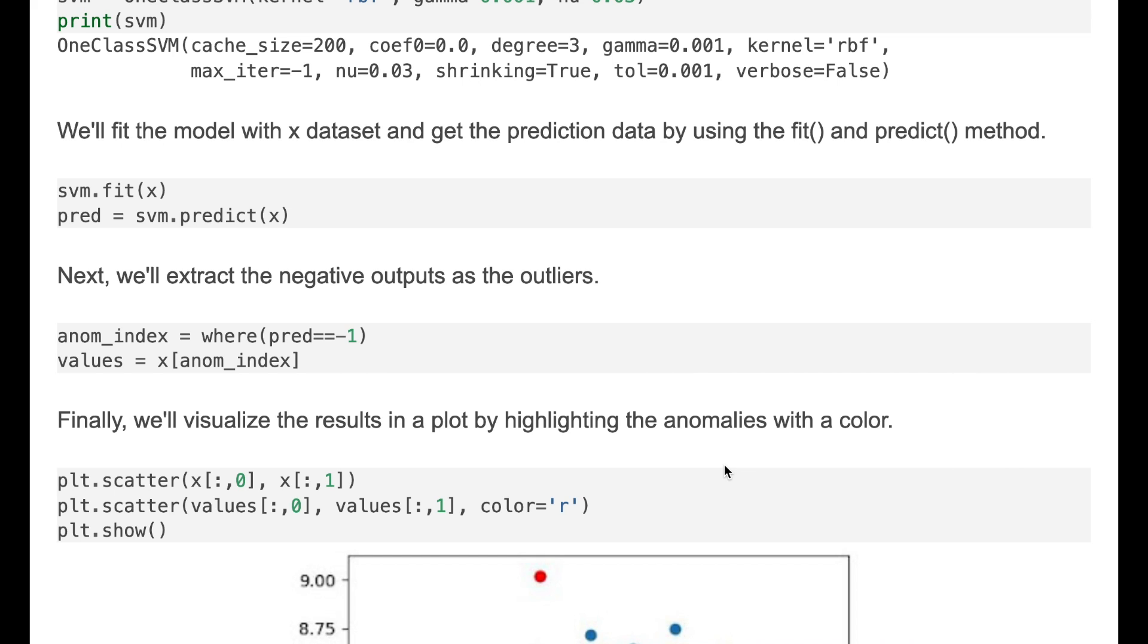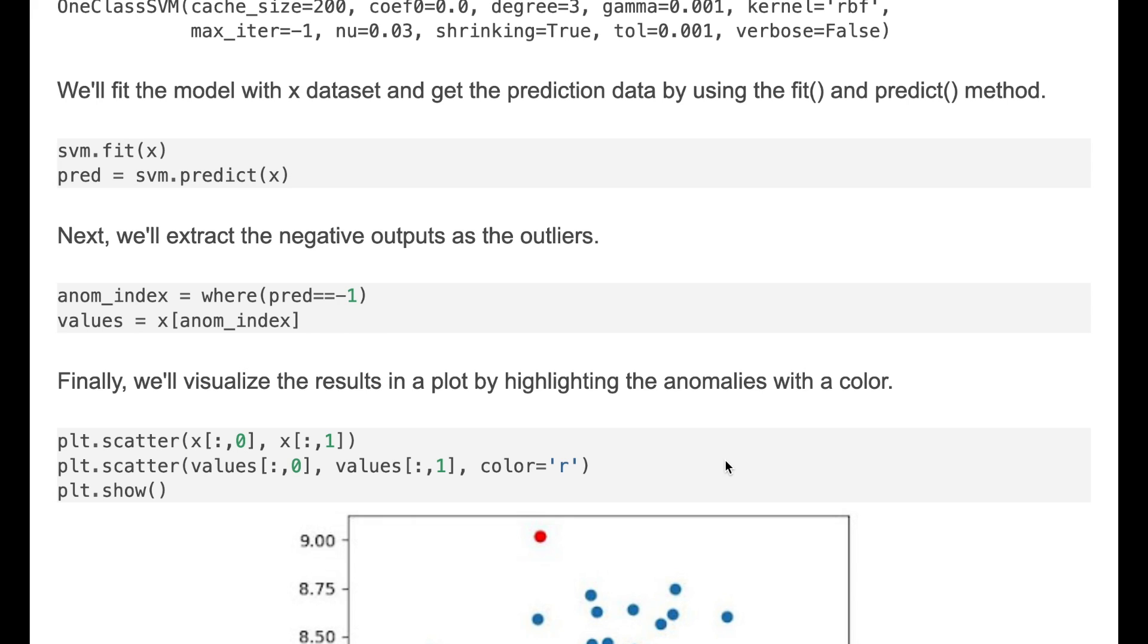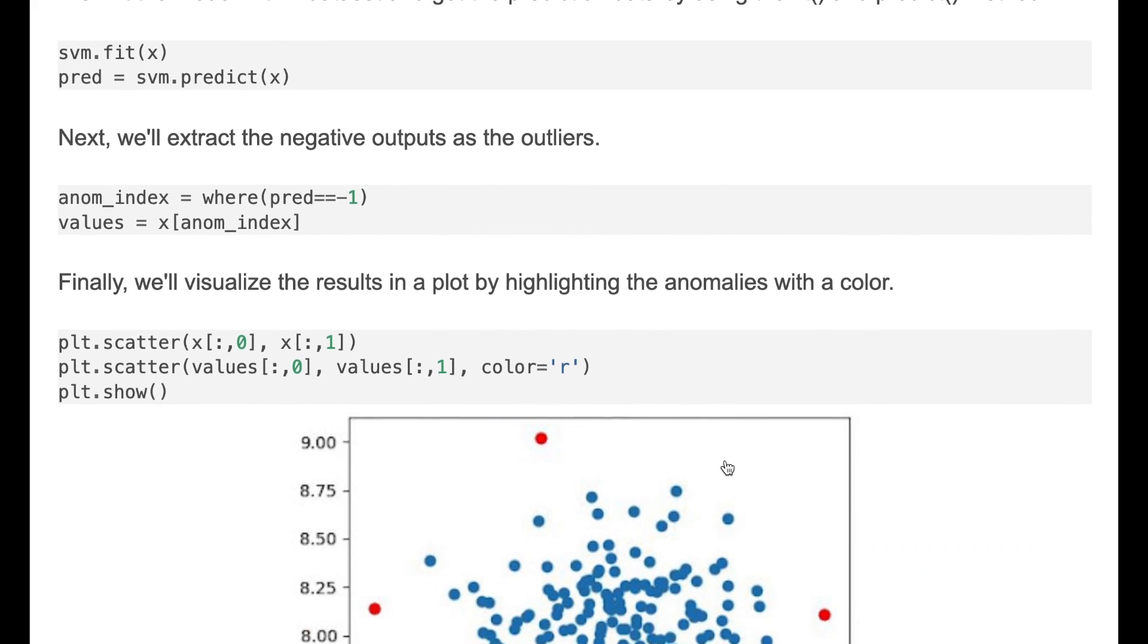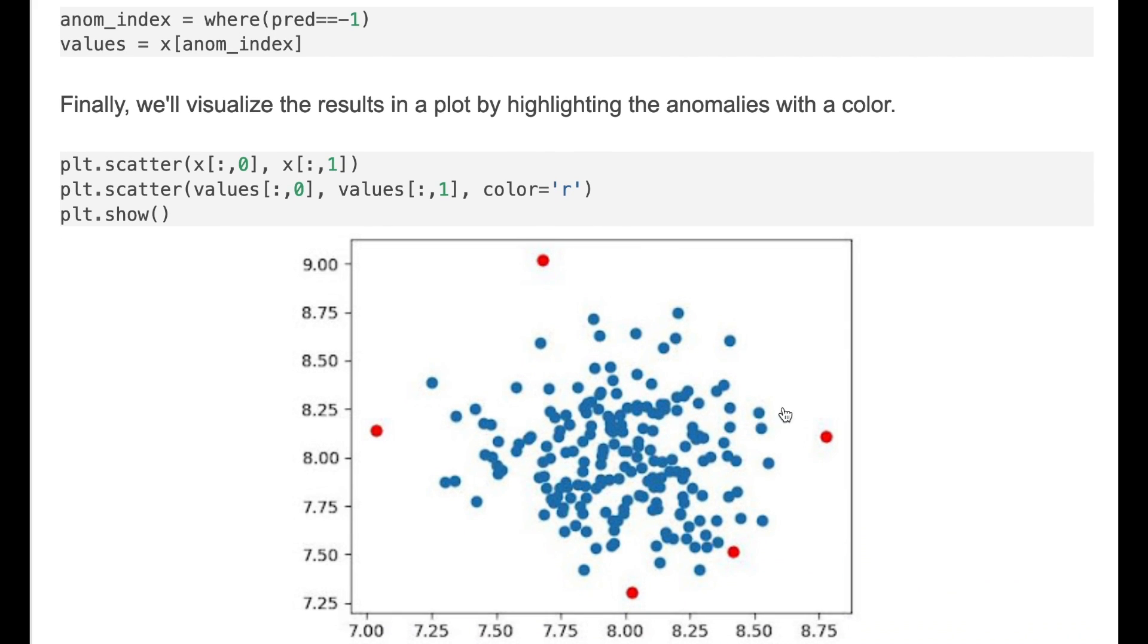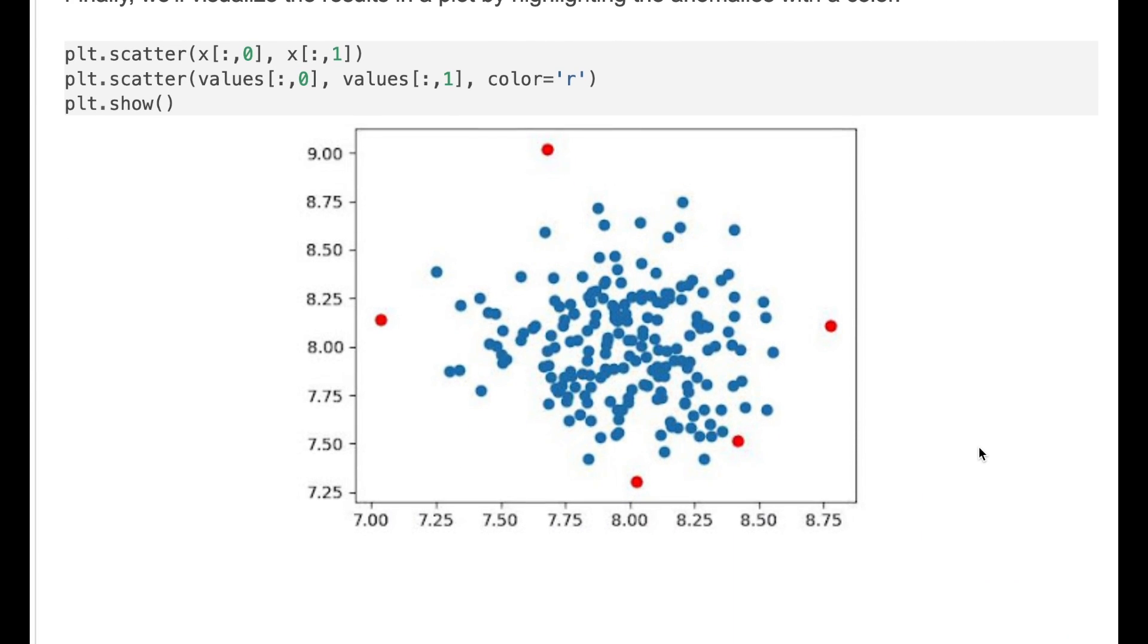Then we'll extract the negative outputs as outliers and we'll detect their indexes and find out their values. Then we'll visualize the results in a plot by highlighting the anomalies with a color. Here we've got five anomaly points in this dataset.